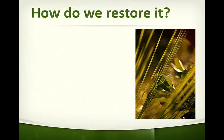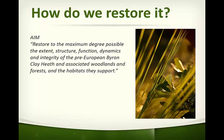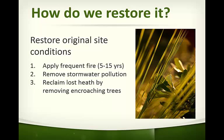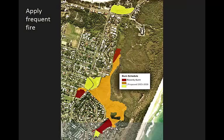So how do we restore the clay heath? In 2013, within Arakwal National Park a restoration management plan was written. It states the primary aim is to restore to the maximum degree possible the extent, structure, function, dynamics and integrity of the pre-European Byron Clay Heath and associated woodlands and forests and the habitats they support. The main overriding strategy is to restore the original site conditions: firstly to apply frequent fire every five to fifteen years, to remove stormwater pollution, and to reclaim lost areas of heathland by removing encroaching trees. Fires have been undertaken as restoration burns in three areas in the Clay Heath to date.